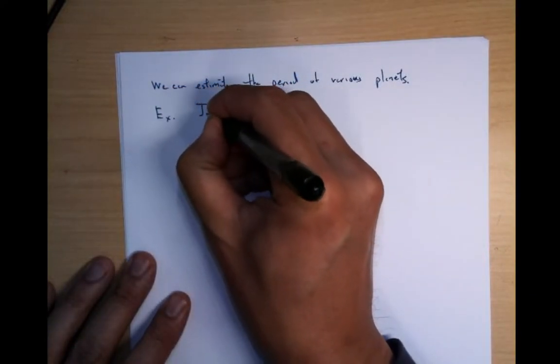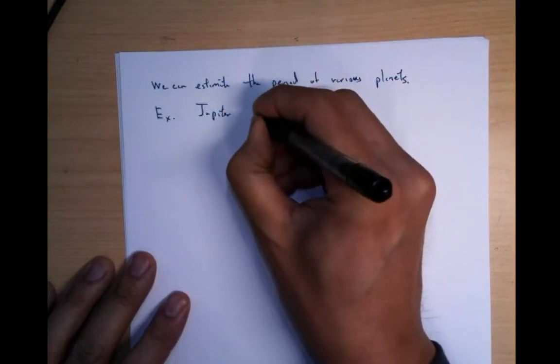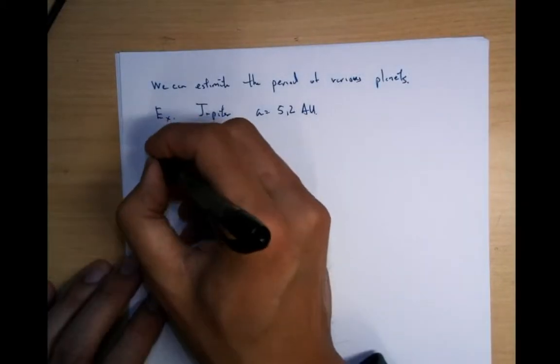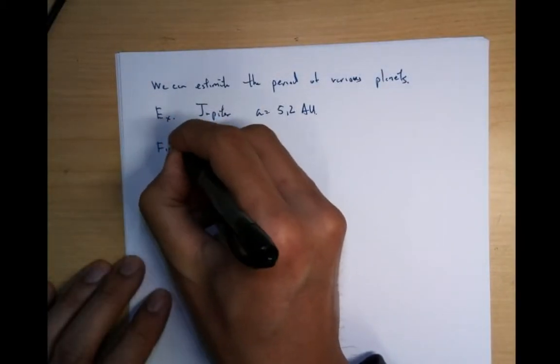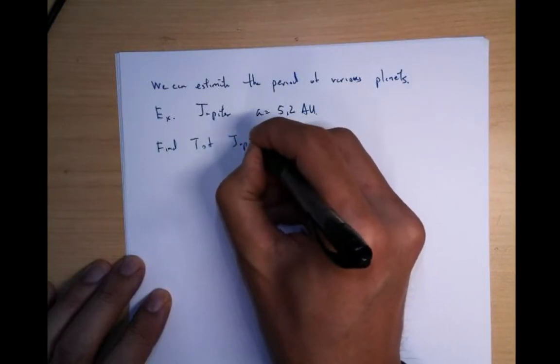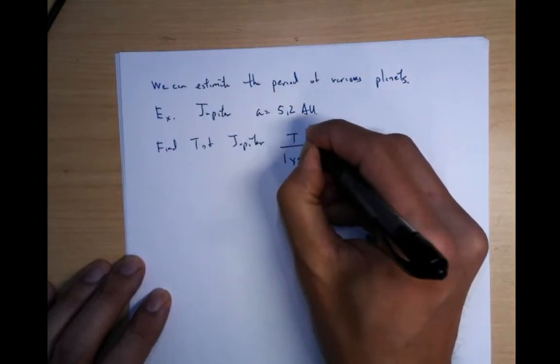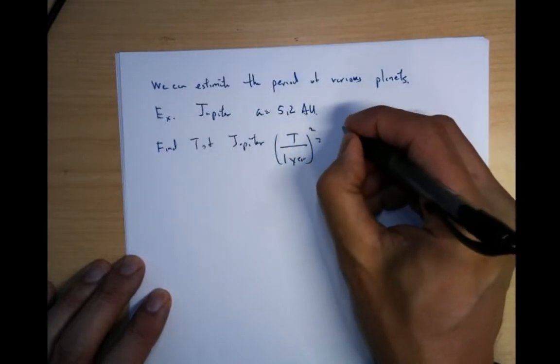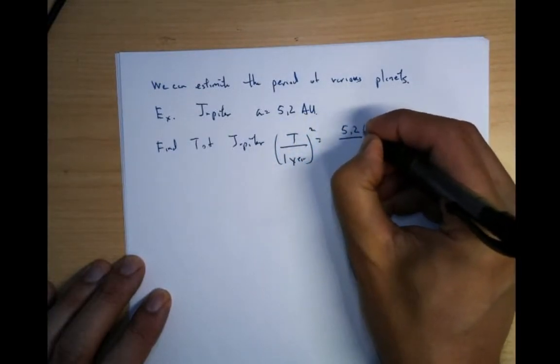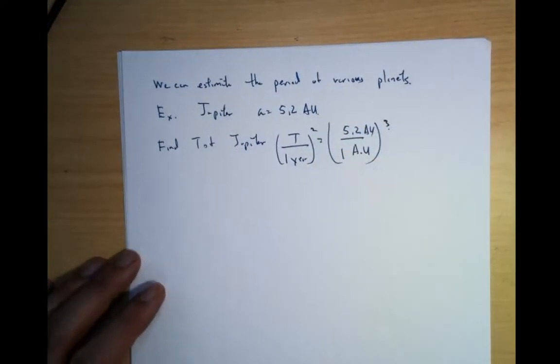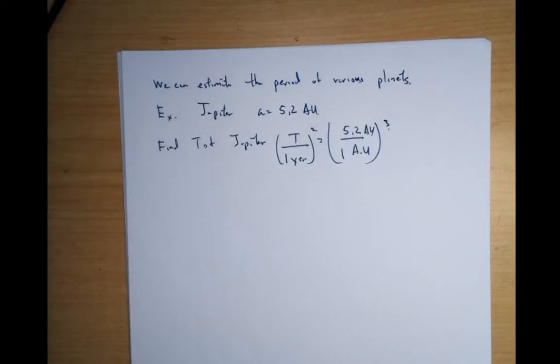A is 5.2 AU. And so let's find the period of Jupiter. So T over one year squared is equal to 5.2 AU over 1 AU cubed. Let's go ahead and figure that out. Get my little calculator out. There we go.